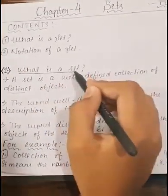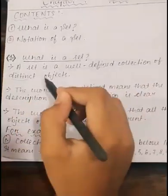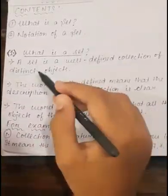First, what is a set? A set is a well-defined collection of distinct objects. Here, the keywords are well-defined and distinct.